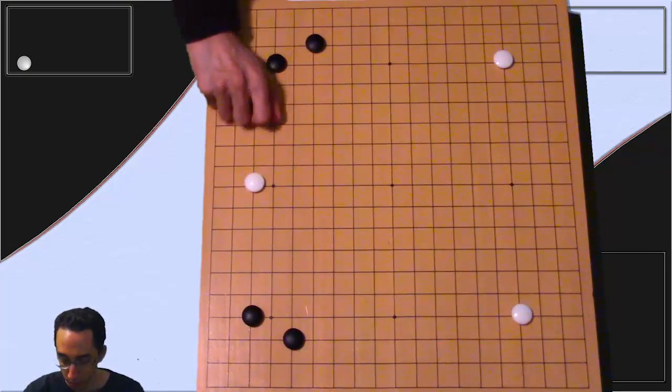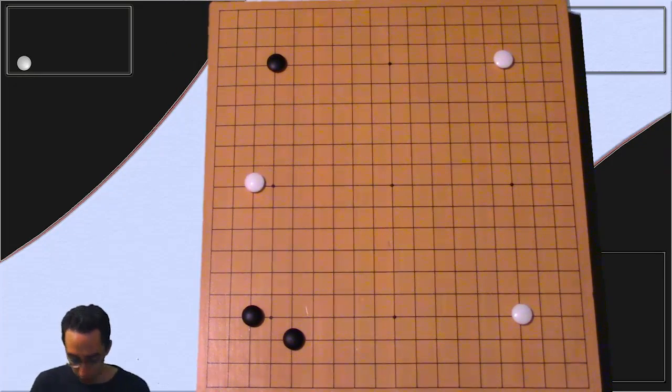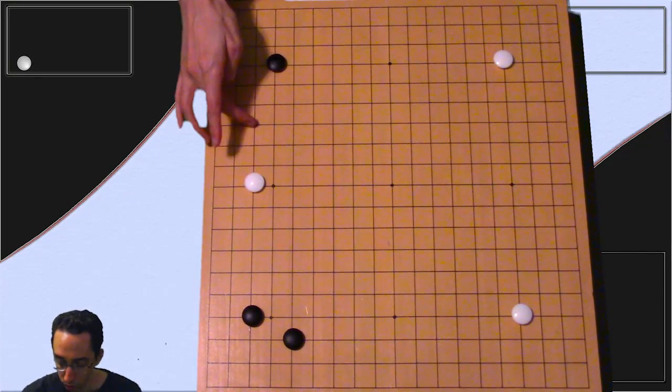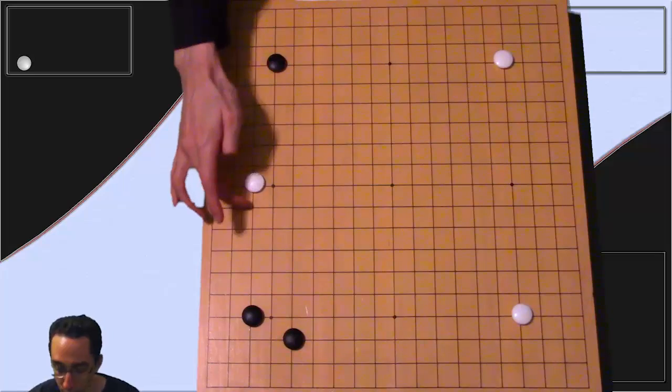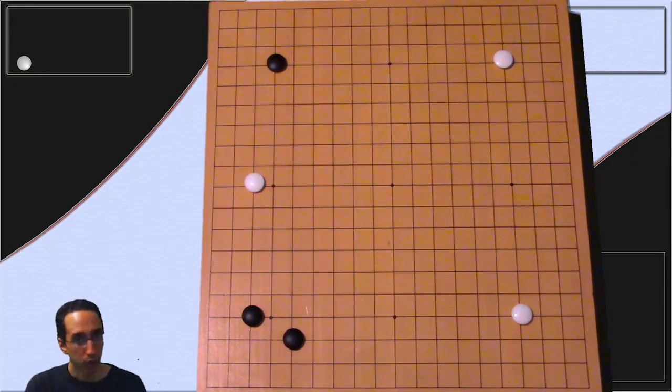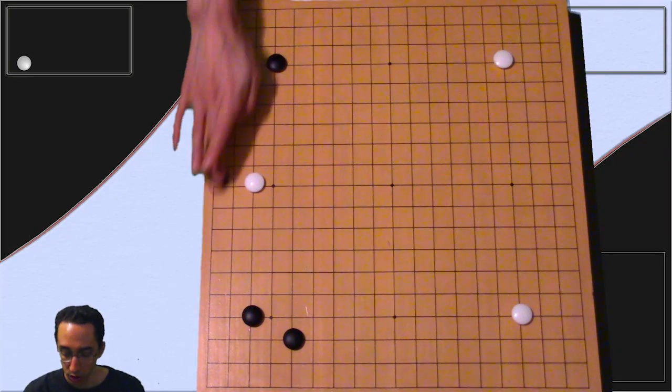If our opponent does this one instead, well, this one gets fun. This one gets fun, because here we've got one, two, three, four, five lines open. Here we have one, two, three, four, five lines open. So now you can actually play on either or.